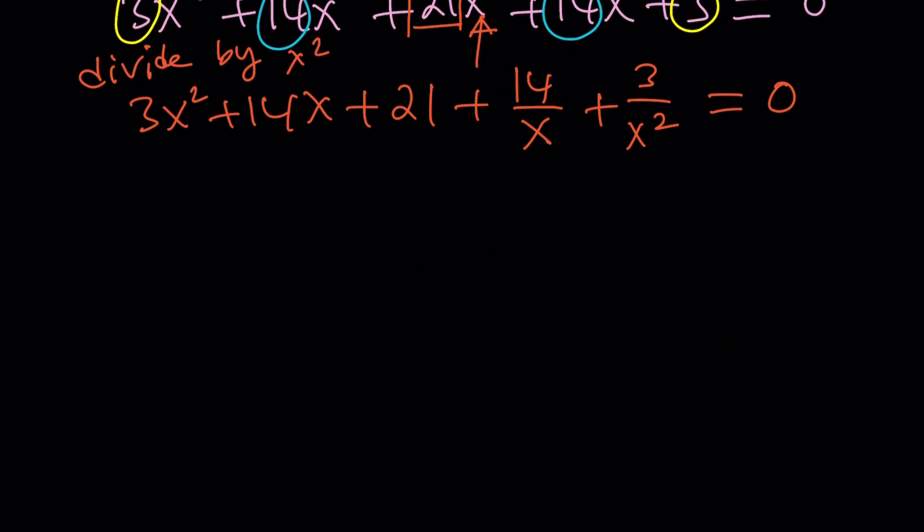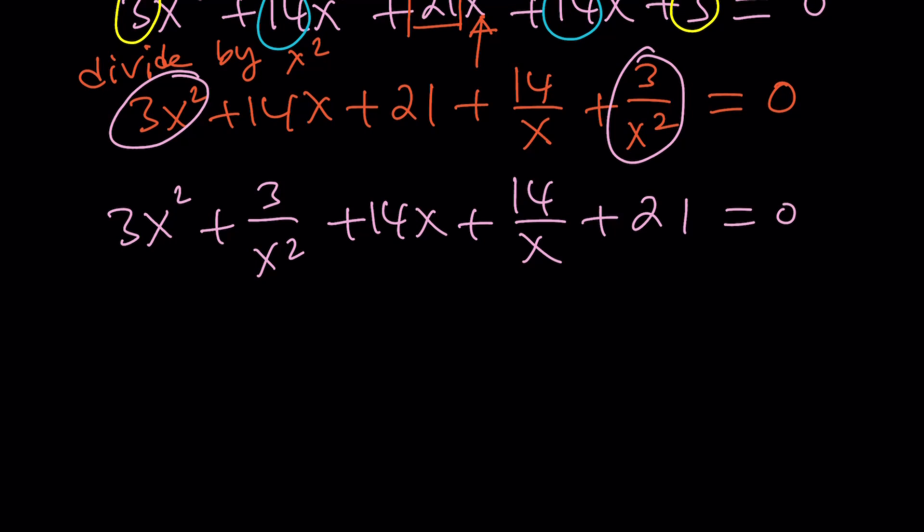Now, we're going to go ahead and do the following. We're going to pair up the good terms. There's a reason why those coefficients are equal. For example, this one and this one goes well together, so I'm going to write it as 3x squared plus 3 over x squared and then 14x goes with 14 over x and 21 is a constant, so it's going to be left alone. Make sense?